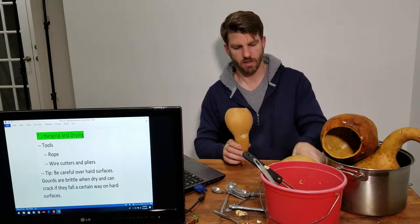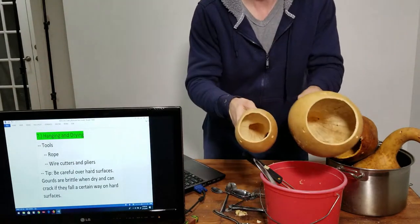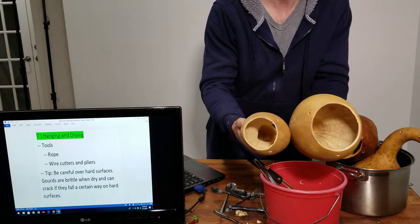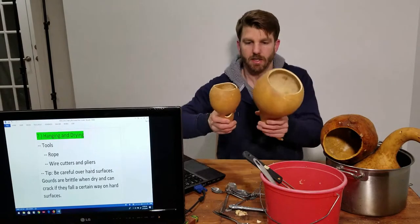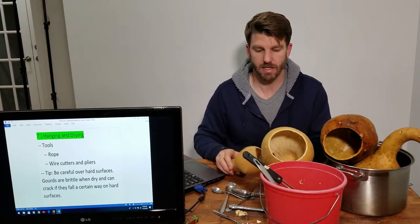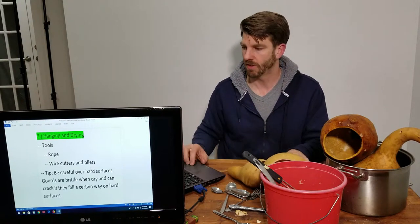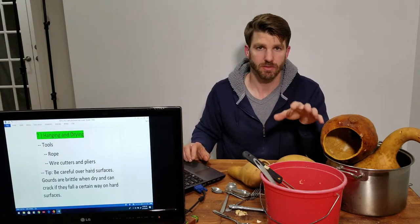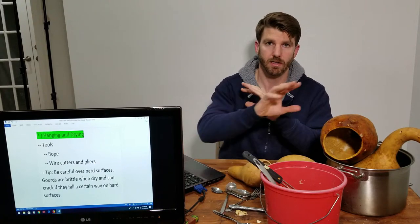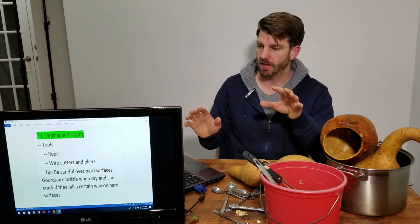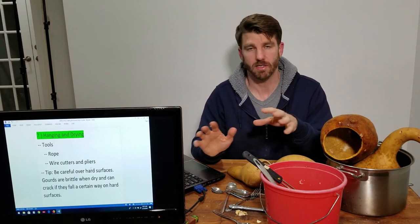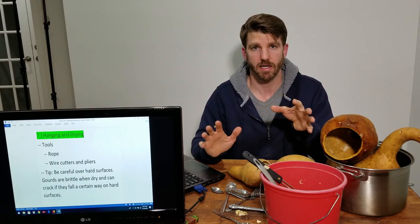We've got our gourds clean—they look like this on the inside. We need to hang them and dry them so we can then stain and seal them. The next section is going to be pretty quick. I'm going to go into my basement room where I have a rope and where I'm hanging these to show you how to do that.